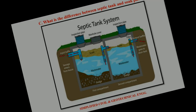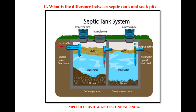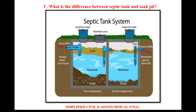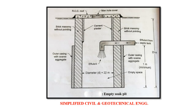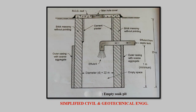Our third point is what is the difference between septic tank and soak pit. In a septic tank, effluent from water closet is collected. The effluent here gets treated biologically and the treated water will be passed to the soak pit. The waste water from the bathroom and kitchen is directly connected to the soak pit.